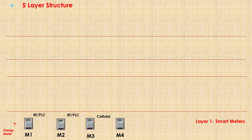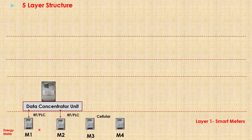When these smart meters measure and record the energy consumption data, they send this data to the next entity. In the case of RF or PLC communication technology used in smart meters, this data is transferred to a data concentrator unit, which is the second layer of this AMI system. RF and PLC have limitations in sending data over long distances — this technology can only send data for short distances like 100 meters or 200 meters. That's why we use a data concentrator unit for sending data over long distances.